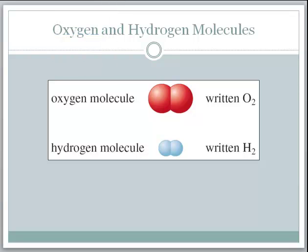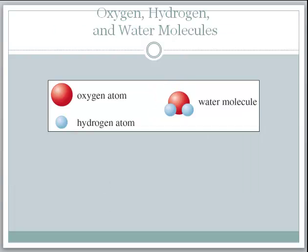The first law was developed by Proust, and we refer to it as the law of definite proportions. Basically what it means is that if you've got a molecule — in this case oxygen — the ratio is always going to be two oxygen atoms for each oxygen molecule. You're not going to have O₃ or just O; those are completely different compounds. So oxygen is always going to have the same ratio of atoms according to the formula.